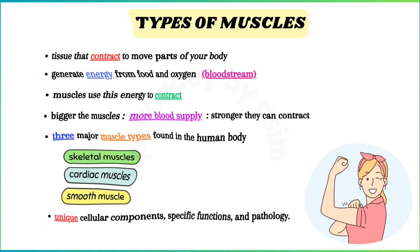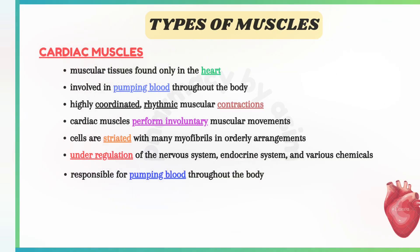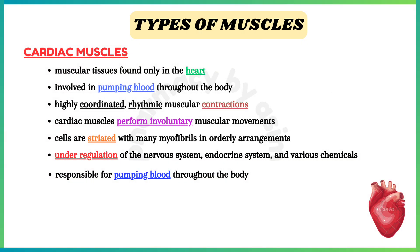There are three major muscle types found in the human body: skeletal, cardiac, and smooth muscles. Each muscle type has unique cellular components, physiology, specific functions, and pathology. Now let's talk about each muscle one by one.